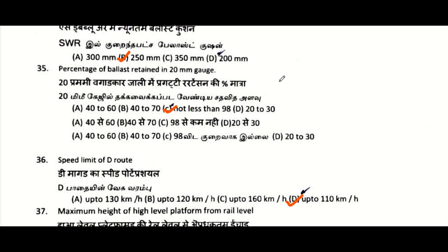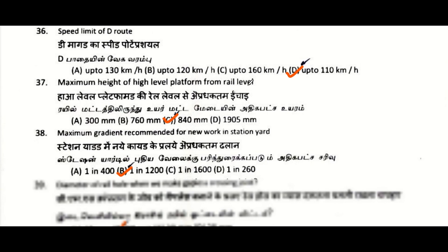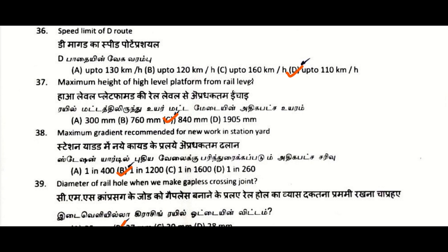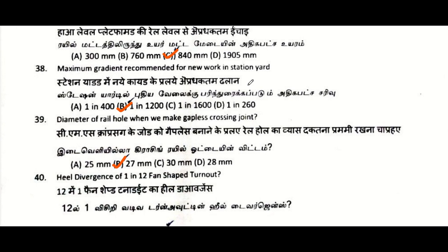Minimum ballast cushion in SWR: 250 mm, also as per IRPWM 2020. Percentage of ballast retained on 20 mm gauge: not less than 98%. Speed limit of D route: up to 100 kmph. Maximum height of high level platform from rail level: 840 mm.